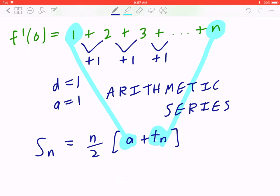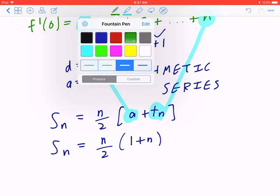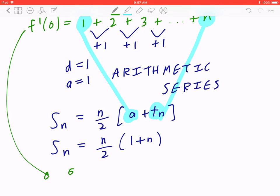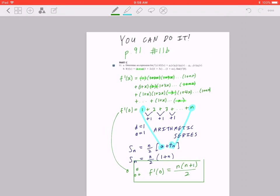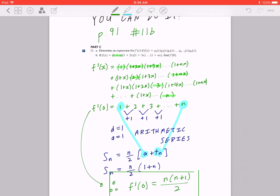The sum of all these terms is going to be n divided by 2 times 1 plus n, which implies that, therefore, f prime of 0 equals to n times n plus 1 divided by 2. I hope this makes sense.